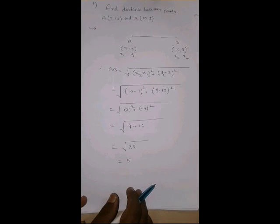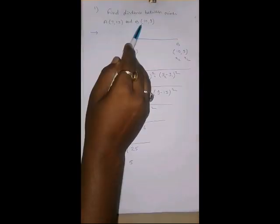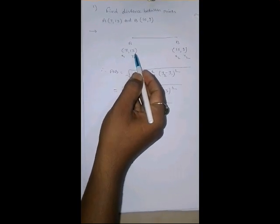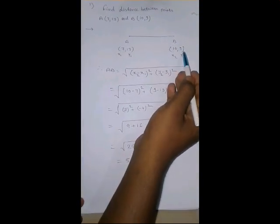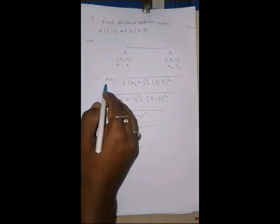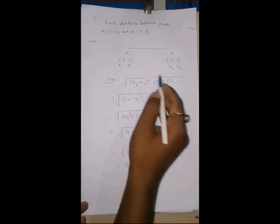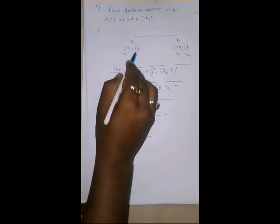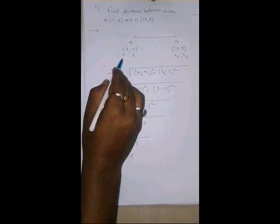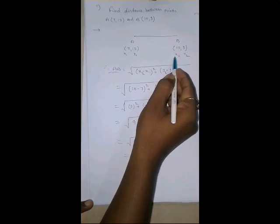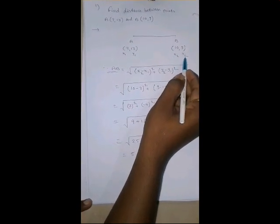Now, let us apply the formula to find the distance between these two points AB. A coordinate is 7, 13, whereas the coordinate of B is 10, 9. As we have already seen, to find AB, this is the distance formula. In A, this is called our x1, this is our y1. That is, the value of x1 is 7 and the value of y1 is 13. Whereas, 10 is x2 and 9 is our y2.